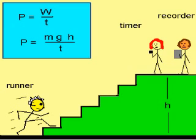Power is the rate that work is done. It is defined as work divided by time, or W divided by t. The power produced by the runner is dependent on how quickly he or she runs up the stairs.